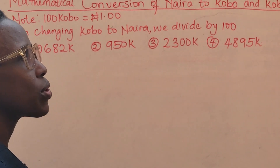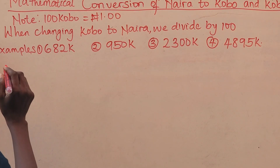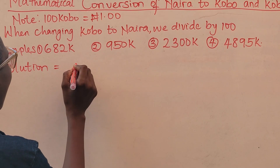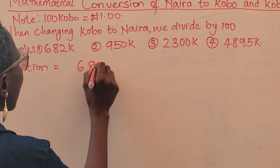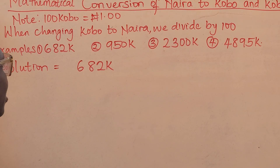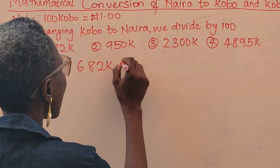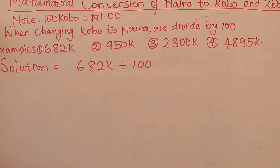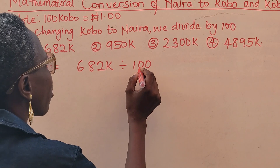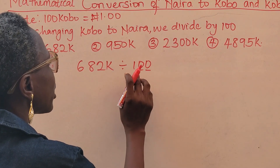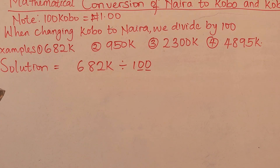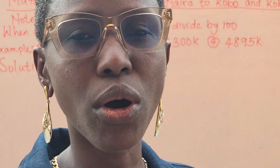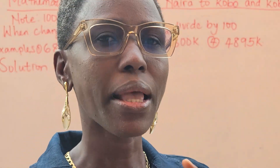Let's go to the solution. We have 682 kobo and we are converting it to naira, so we are going to divide it by 100. When you are dividing by 100, you have two zeros, so you are going to move the decimal point twice — but backward.